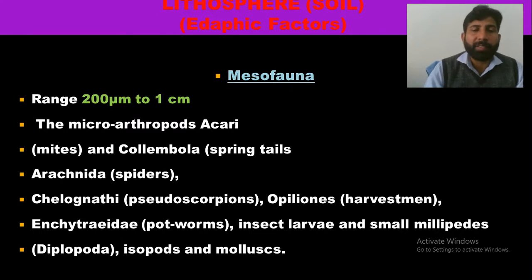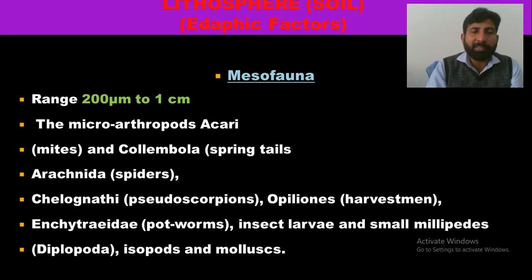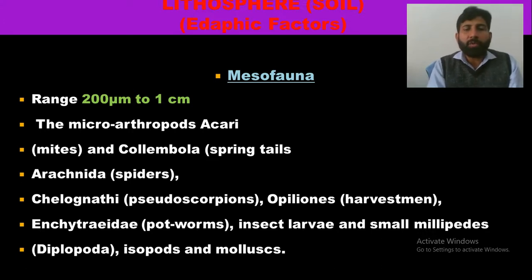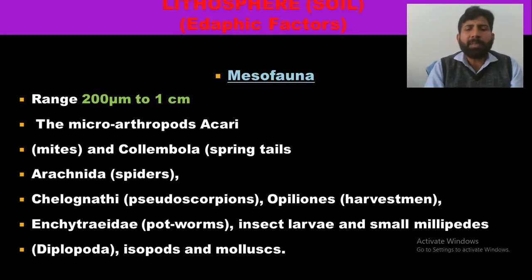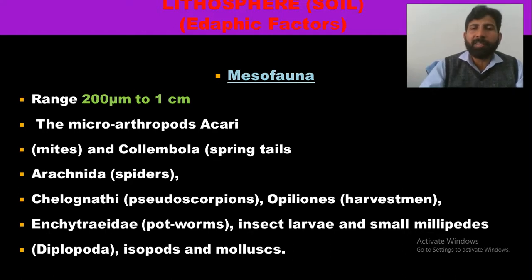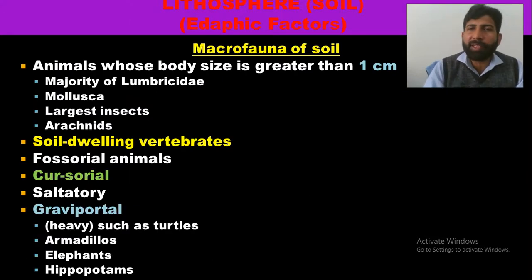Mesofauna ranges from about 200 micrometers up to 1 cm and includes microarthropods, mites, Collembola (springtails), Arachnida such as spiders and pseudo-scorpions, Opiliones (harvestmen), insect larvae, small millipedes, Diplopoda, Isopoda, and molluscs. Macrofauna consists of animals whose bodies are greater than 1 cm, the majority being Lumbricidae (earthworms), Mollusca, larger insects, arachnids, and soil-dwelling vertebrates.